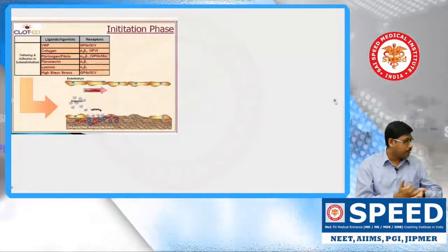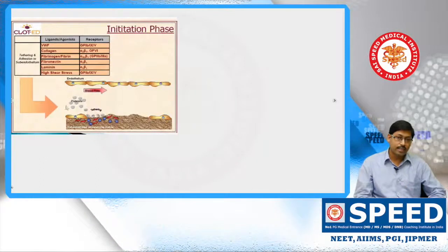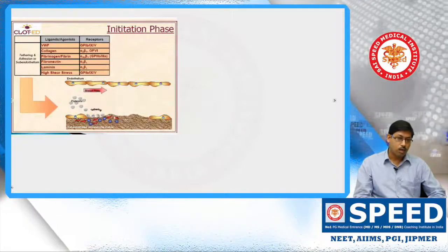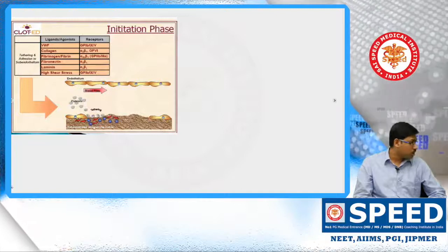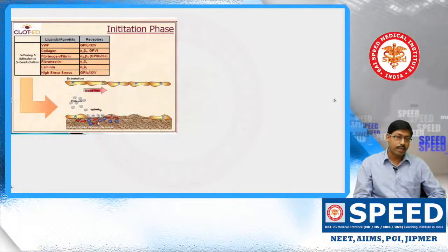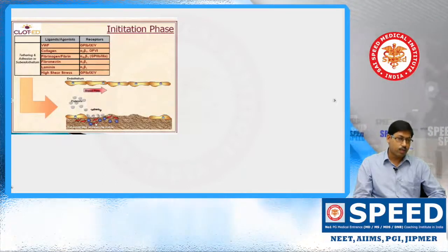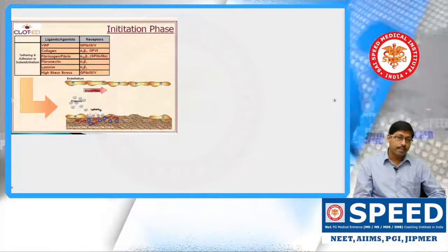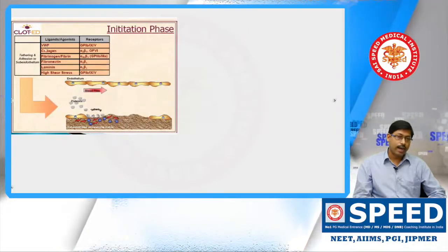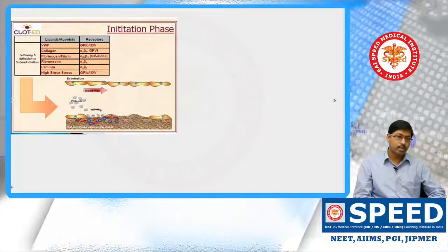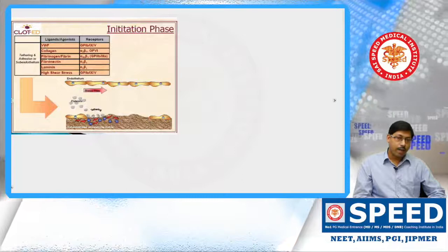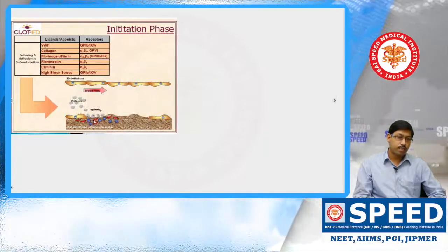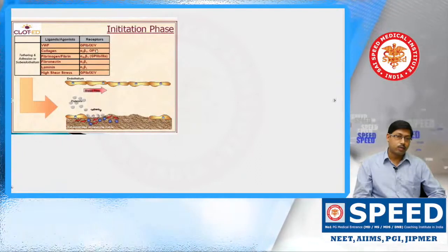In the initiation phase — platelet adhesion — all the platelets come to the breached surface. Whenever there is a breach in the vessel wall, the subendothelial area gets exposed. There are components here like collagen fibers and intercellular matrix that come into contact with blood components. The platelet gets attached — either by directly binding with collagen on the subendothelial space using GP4 and GP6, or by binding using von Willebrand factor as a bridge.